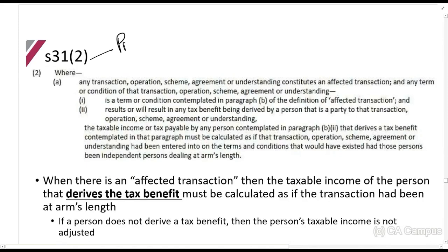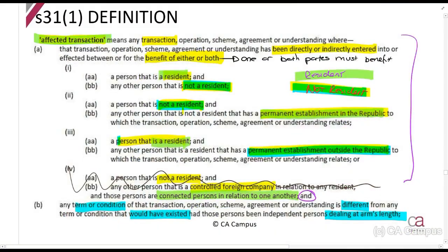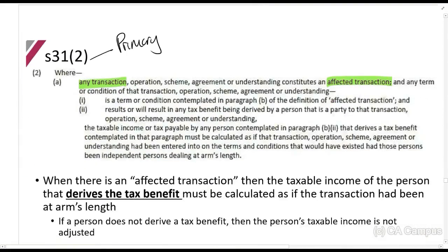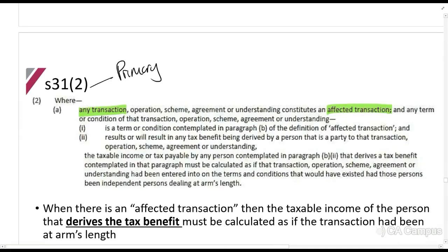Here is Section 31.2, the primary adjustment. It says: where any transaction, operation, scheme, or agreement constitutes an affected transaction — that is, between a resident and a non-resident and not at arm's length — and any term or condition of that transaction results in a tax benefit by a party to that transaction, the taxable income of any such person must be calculated as if that transaction had been entered into under conditions that would have existed at arm's length.